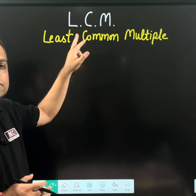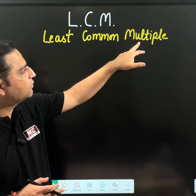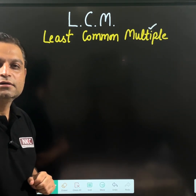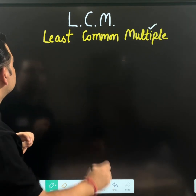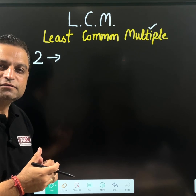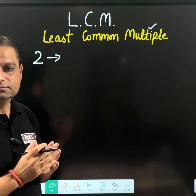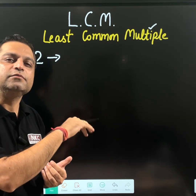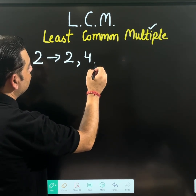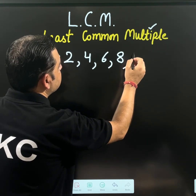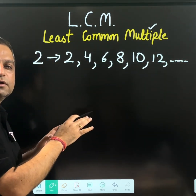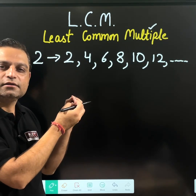LCM means Least Common Multiple. One must first be clear about what is the meaning of multiple. If I tell you to write multiples of two, writing multiples of two means all those numbers which are divisible by two, or in easy words, which come in the table of two. For example: 2, 4, 6, 8, 10, 12, etc. These all numbers which I am writing, they are the multiples of two.